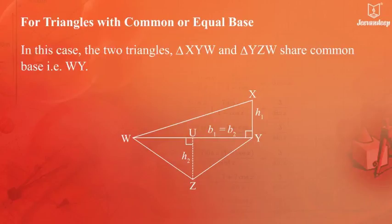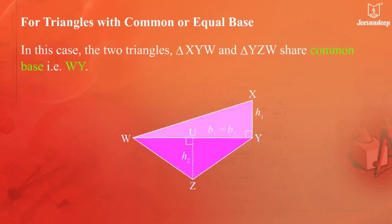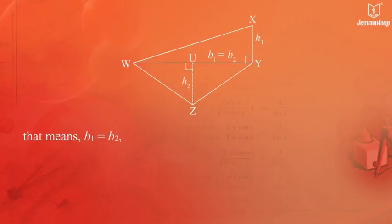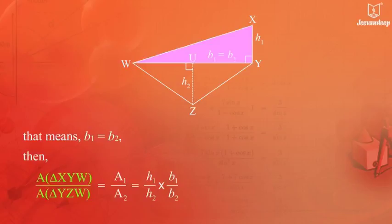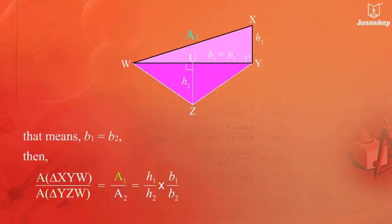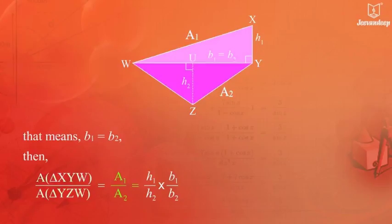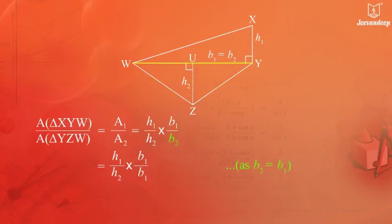For triangles with common or equal base, in this case the two triangles — triangle XYW and triangle YZW — share a common base WY. That means B1 equals B2. Then, area of triangle XYW upon area of triangle YZW equals A1 upon A2, which equals H1 upon H2 multiplied by B1 upon B2.